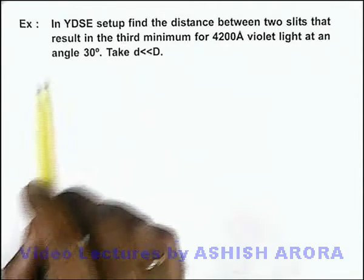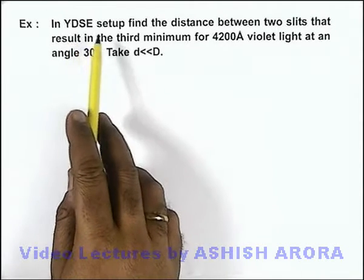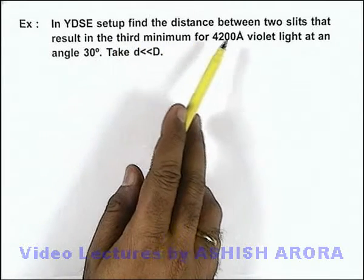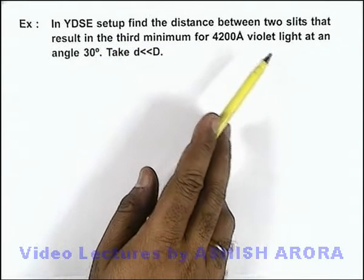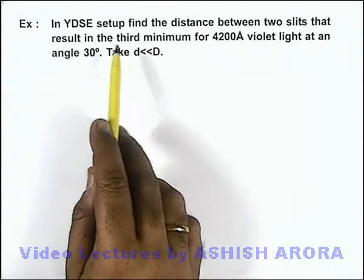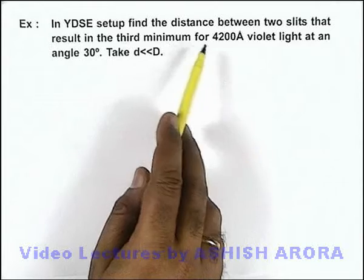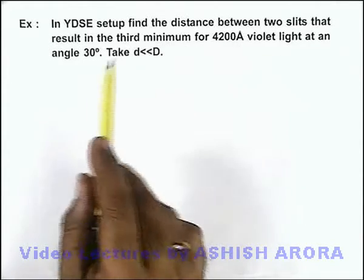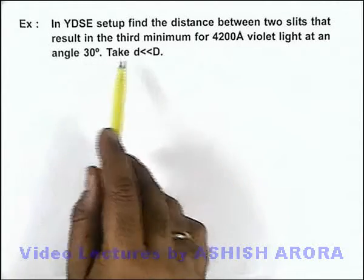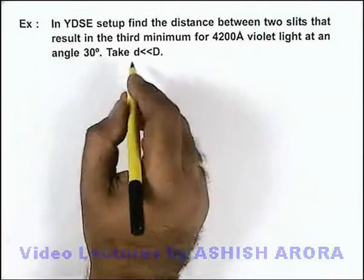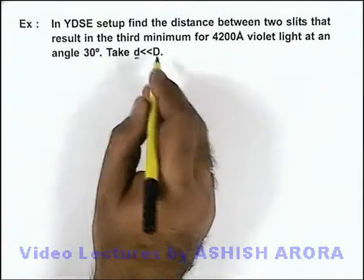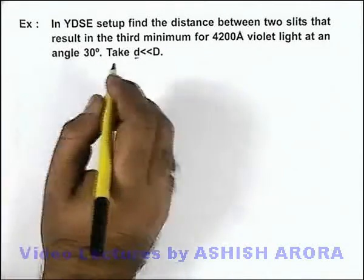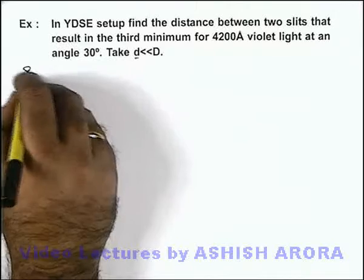In this example, we are given a YDSE setup. We are required to find the distance between the 2 slits that result in the 3rd minimum for 4200 angstrom violet light at an angle of 30 degrees. We can take the separation between slits as very small compared to the separation between slit and screen.